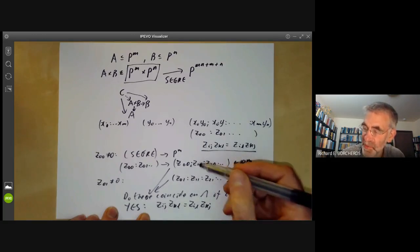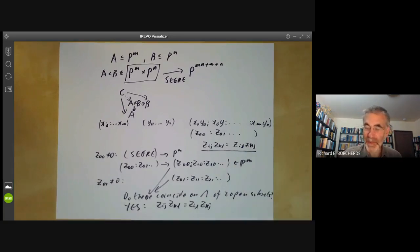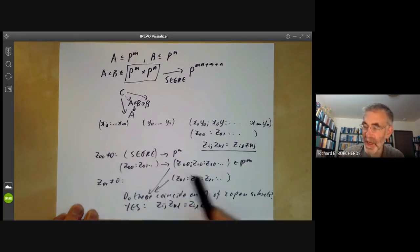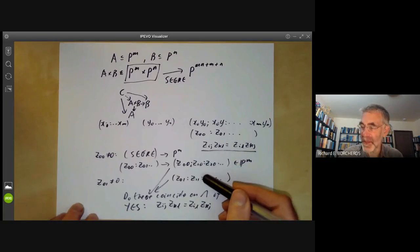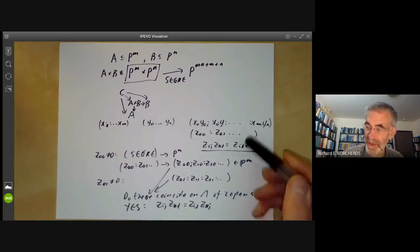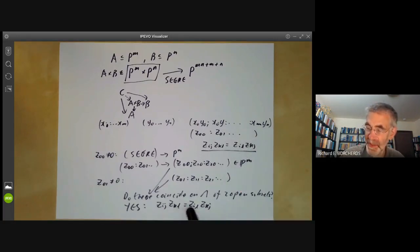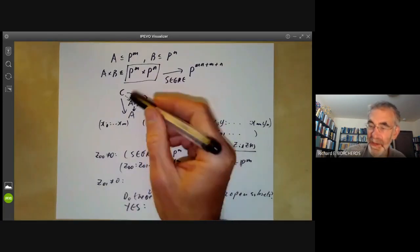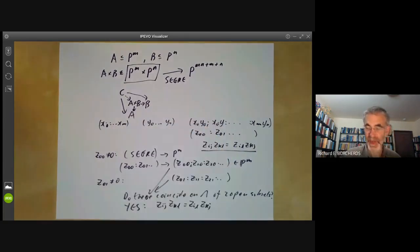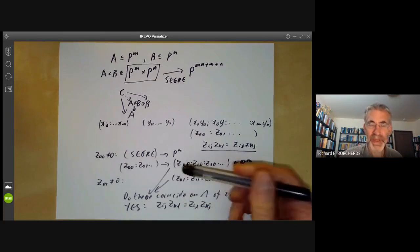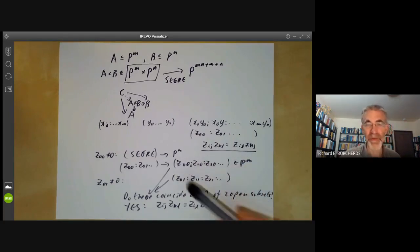And this follows from all these relations, ZIJ ZKL equals ZIL ZKJ. So these two points are actually the same in P,M. And similarly, we have several other open subsets covering up as part of the cover of the Segre variety. And again, you can check that we get a well-defined map to P,M on each of these open subsets. And these quadratic relations imply that all these maps are the same on the intersection. So we get a well-defined map from the Segre variety to the two copies of projective space. As you see, this proof is almost trivial. It just consists of some slightly confusing bookkeeping.